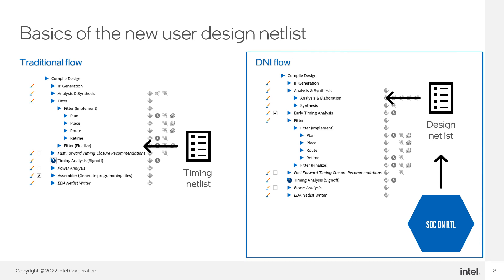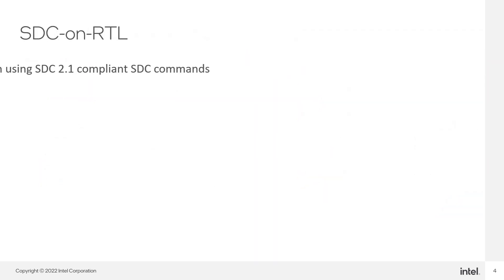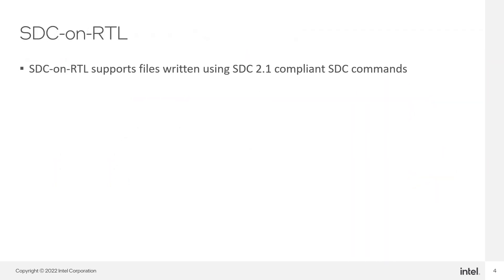SDC on RTL helps to read SDC files which target the user design netlist early in the compilation flow, and use them in the later stages of Intel Quartus Prime compilation. This will allow you to do more iterations per day, since you don't need to run the fitter every time your design changes. SDC on RTL supports files written using SDC 2.1 compliant commands and can support general TCL code that the DNI console can parse.